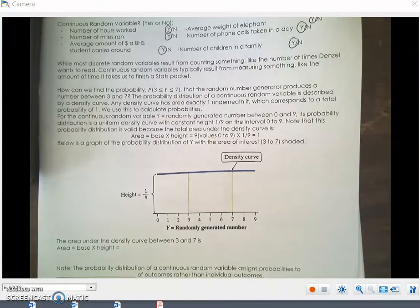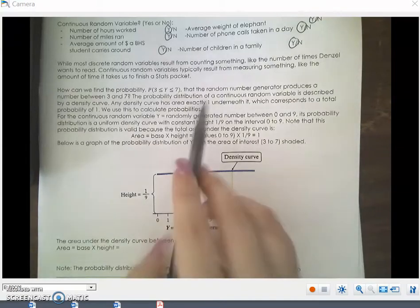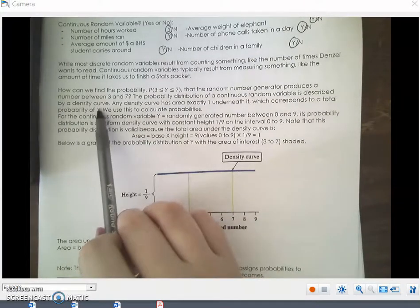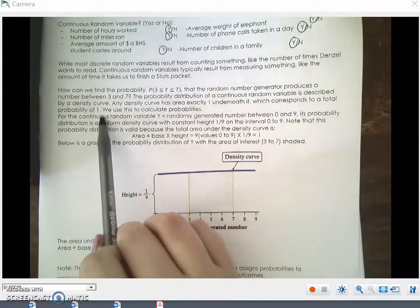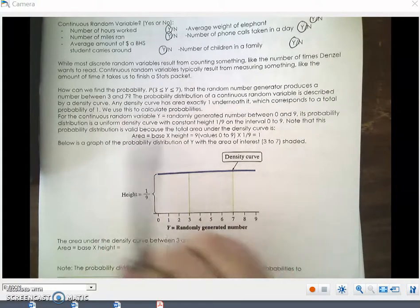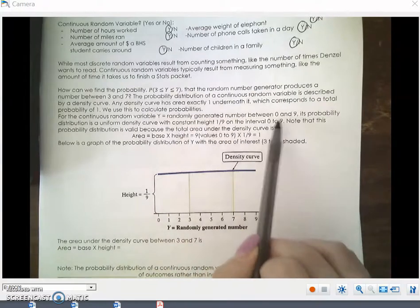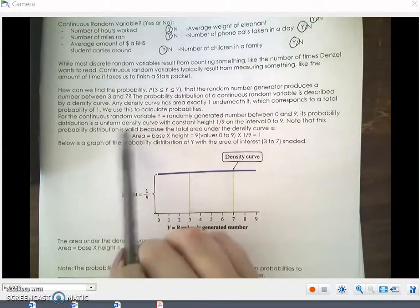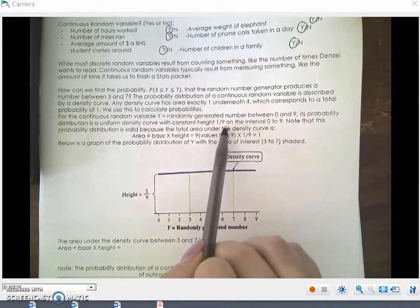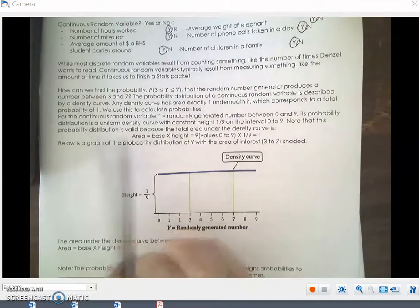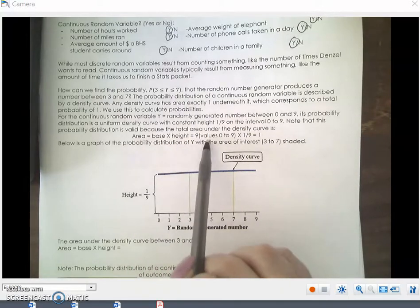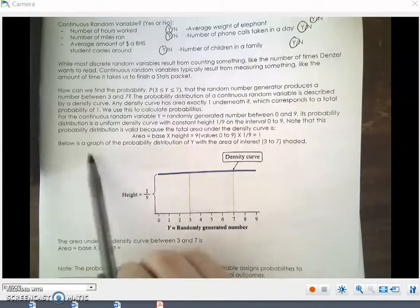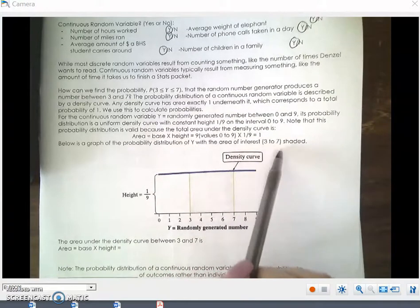How can we find the probability? The continuous random variable is described by a density curve. Any density curve has an area exactly 1 underneath it, which corresponds to a total probability of 1. We use this to calculate probabilities. For the continuous random variable y equals randomly generated number between 0 and 9, its probability distribution is a uniform density curve with a constant height of 1 ninth on the interval 0 to 9. Note that this probability distribution is valid because the total area under the density curve is area equals base times height. So 9 values times 1 ninth equals 1.